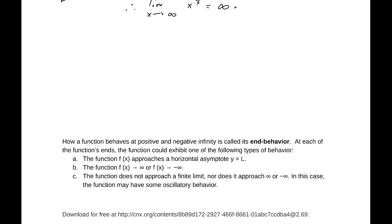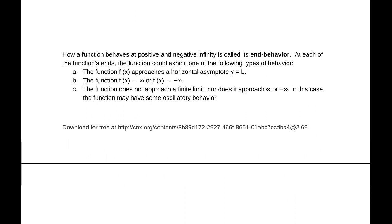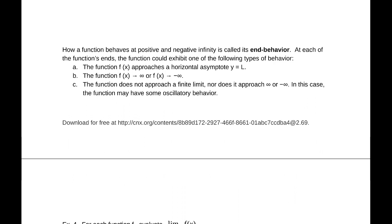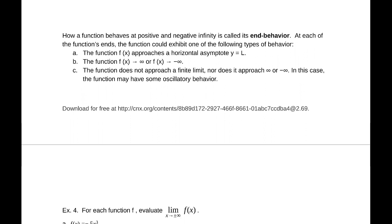How a function behaves at positive and negative infinity is called end behavior — at each of the function's ends, the left (negative infinity) and the right (positive infinity). The function can exhibit one of three things: it could approach a horizontal asymptote, like inverse tangent or 5 − 2/x²; it could approach infinity or negative infinity, like f(x) = x³; or it might not approach a finite limit and doesn't approach infinity either — oscillating behavior, like sine of x, which just diverges and goes nowhere.